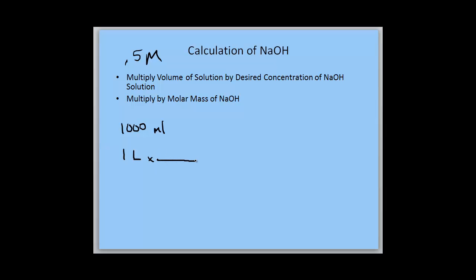it by our desired concentration. We want a 0.5 molar solution, so that is 0.5 moles of NaOH per liter of solution.